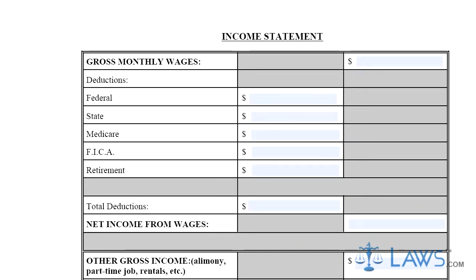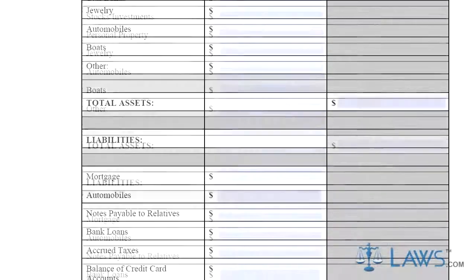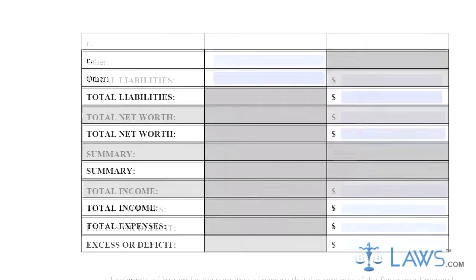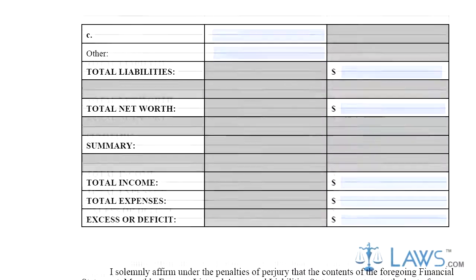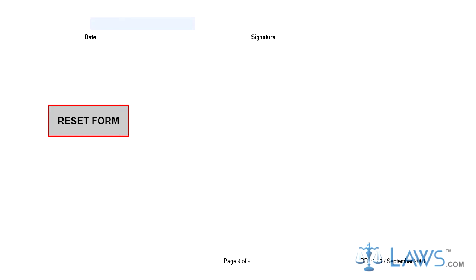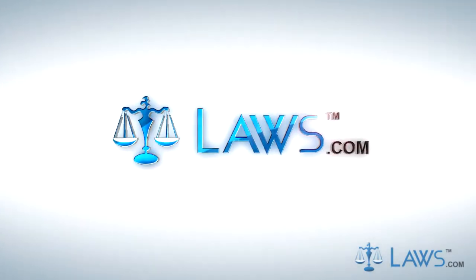Step 11. Page 8 requires you to list all of your assets and debts. You will then be able to calculate your net income. Step 12. Sign and date the last form. Submit it to the circuit court which is hearing your case. To watch more videos, please make sure to visit laws.com.